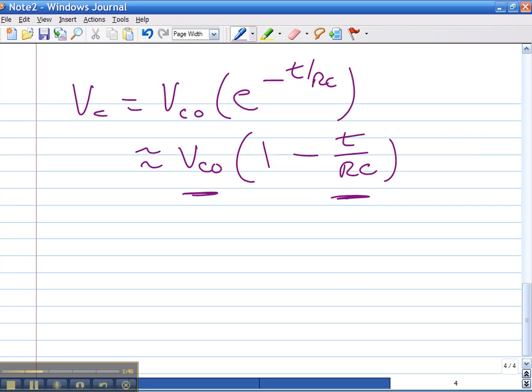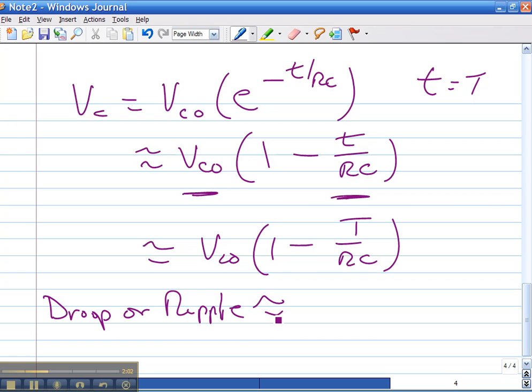So let's write this as Vc0 1 minus T over RC. So the actual droop or ripple is approximately equal to Vc0 T over RC.